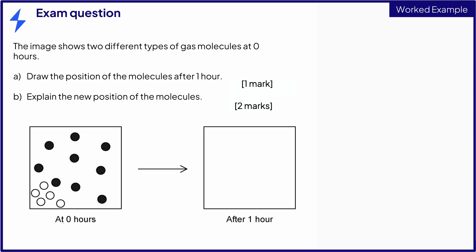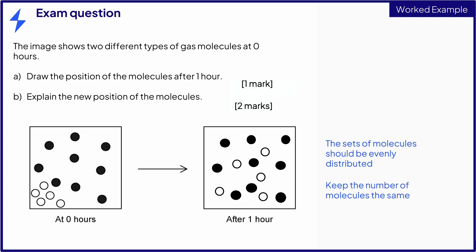For part A, you simply need to draw both sets of molecules evenly distributed within the box. It does not matter how you choose to evenly distribute the molecules as long as they are spread out. Do make sure that you keep the same number of molecules that are shown at zero hours.